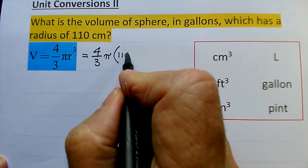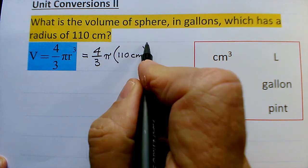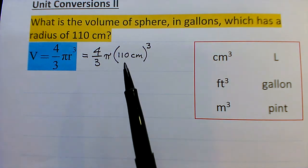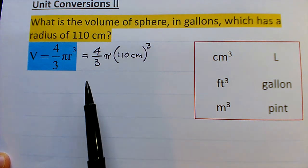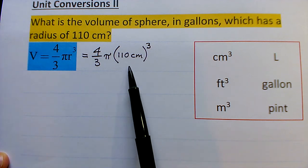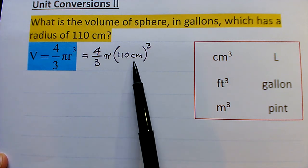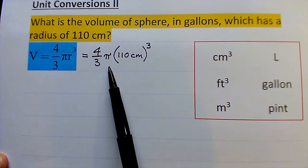So 110 centimeters to the third power. You raise 110 to the third power and centimeters to the third power, everything inside the parentheses. Remember order of operations: raise this to the third power, and then multiply times 4/3 π.